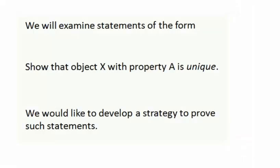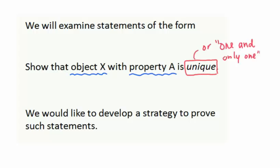Hello and welcome to the next couple sections where we're going to talk about a proof technique called the uniqueness method. In this particular video we're going to take a look at what we call the direct uniqueness method. We're going to be examining statements of the following form: show that an object X that has a property A is unique. The indicating word we're looking for is 'unique' or the phrase 'one and only one'.